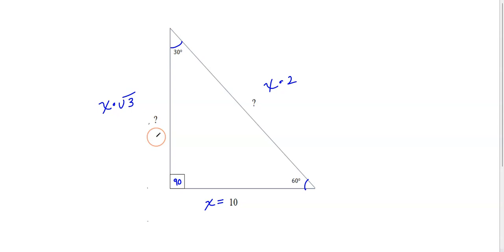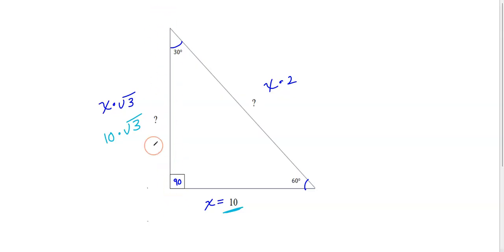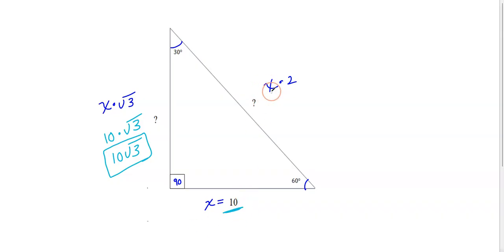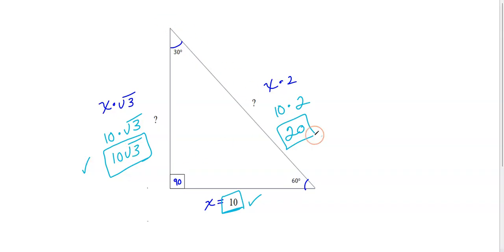With X equal to 10, I can quickly find the long leg: it's X times square root 3, so replacing X with 10 gives us 10 times square root 3, written as 10 square root 3. The hypotenuse is X times 2, so replacing X with 10 gives us 10 times 2, which is 20. The short side is 10, the long leg is 10 square root 3, and the hypotenuse is 20.